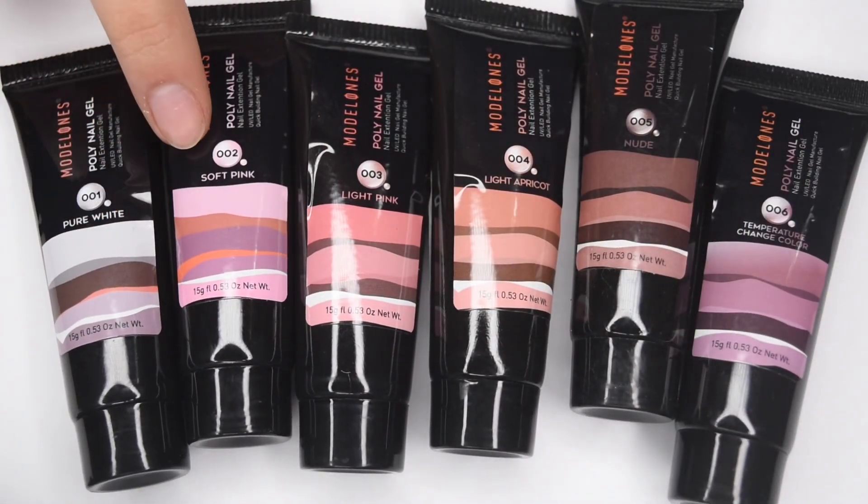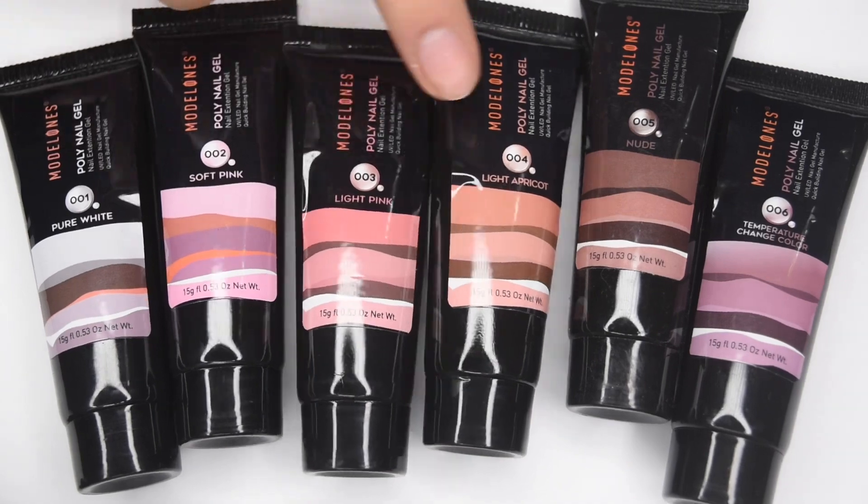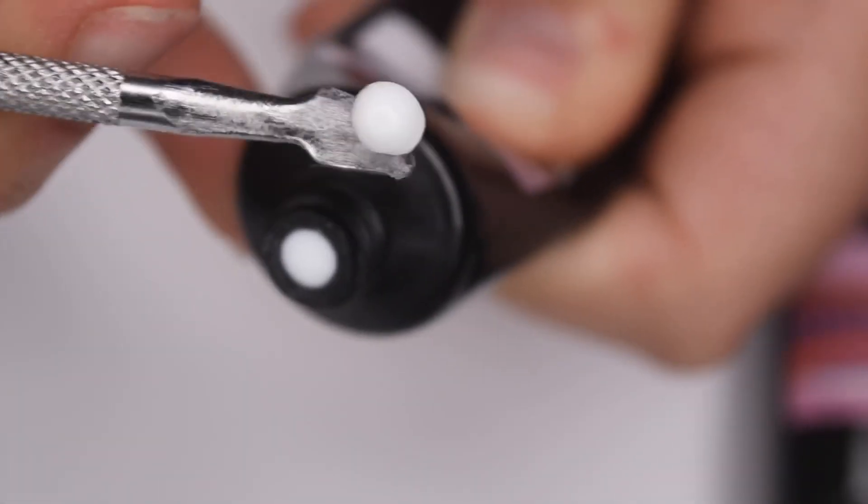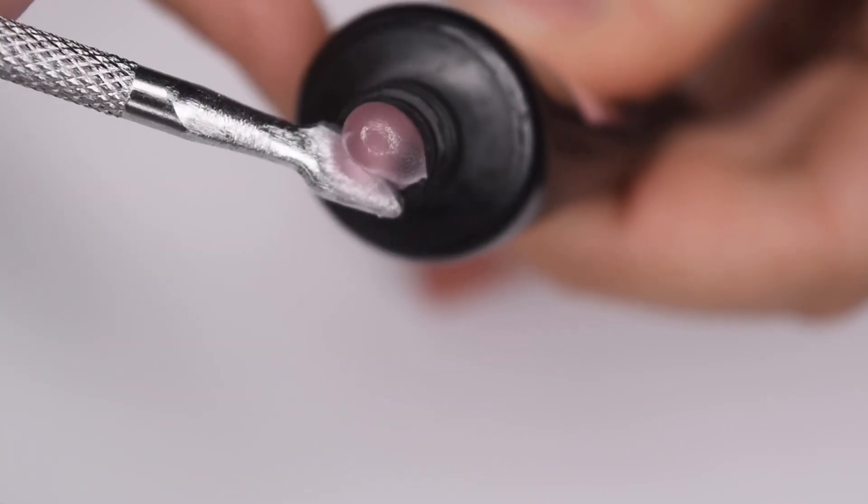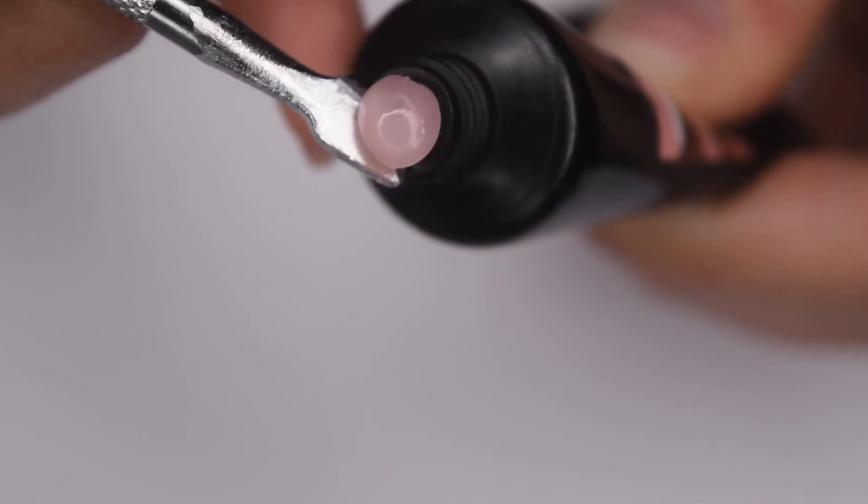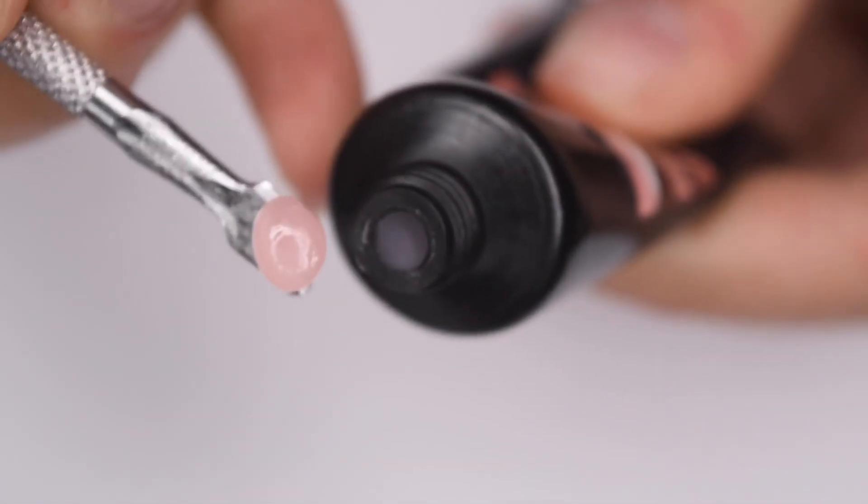And like I said before, there are six different colors of polygel, ranging from number 001 all the way to 006. So shade 001 is pure white and this is a solid white cream polygel. Next is 002 soft pink and this is an opaque light pink color. Here is 003 light pink and this is a light pink translucent polygel. Here is 004 light apricot and this is a translucent peachy pink color.